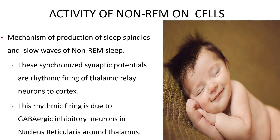Mechanism of production of sleep spindles and slow waves of non-REM sleep: non-REM sleep is characterized by EEG spindles and slow waves produced by synchronized post-synaptic potentials in cortical neurons. These synchronized synaptic potentials are generated by rhythmic firing of thalamic relay neurons projecting to the cortex. The rhythmic firing of relay neurons results from the action of GABAergic inhibitory neurons in the nucleus reticularis, which forms a shell around the thalamus.